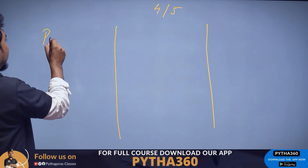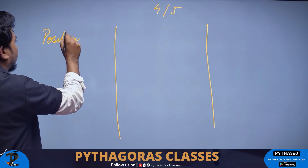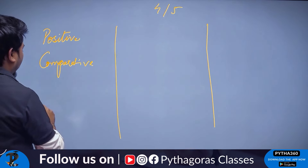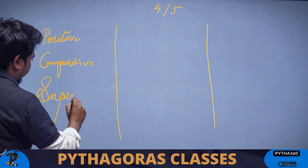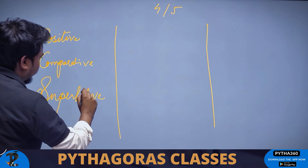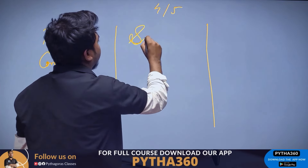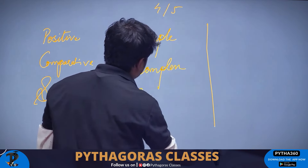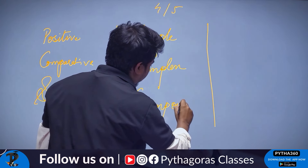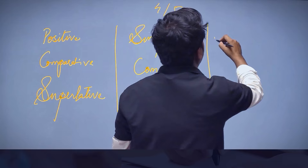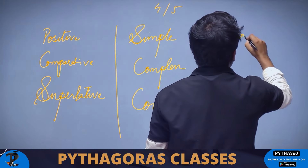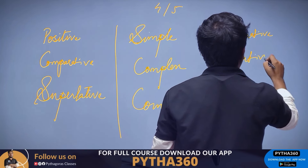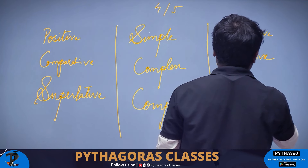The three types of transformation we will cover are: first, positive, comparative, and superlative; second, simple, complex, and compound; and third, affirmative, negative, and interrogative.